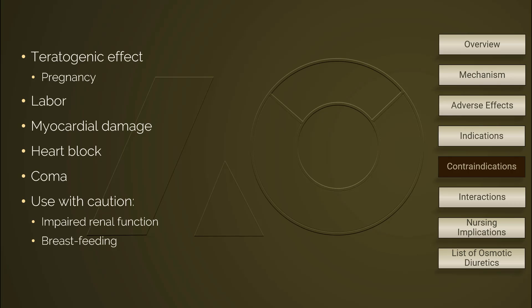If osmotic diuretics need to be used during pregnancy, the expectant mother should be well informed of possible teratogenic effects. Osmotic diuretic is definitely contraindicated during active labor. Other contraindications include myocardial damage, heart block, and comatose.